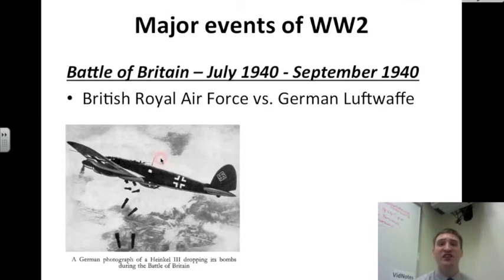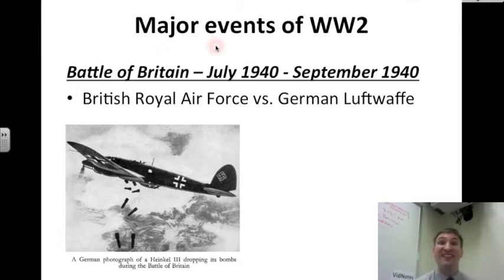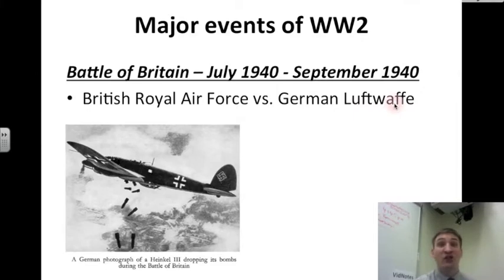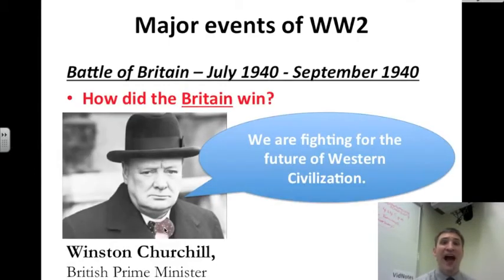Next, Hitler and the Nazis go further west. The Battle of Britain happens from July 1940 to September 1940. It's the Battle of the Air. The British Royal Air Force faces off against the German Luftwaffe, the German Air Force. Here you see a picture of a German Heinkel III dropping bombs on London in the Battle of Britain. How did Britain win this?